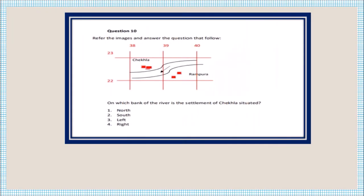Question number ten: on which bank of the river is the settlement Chakra situated? To find the bank of the river, imagine yourself standing in the river facing the direction of water flow. Since the river flows towards the southwest, you stand facing that direction — your right side is the right bank and your left side is the left bank. The settlement Chakra is situated on the right bank of the river.